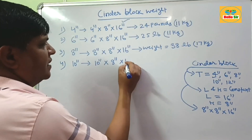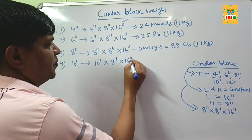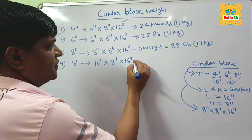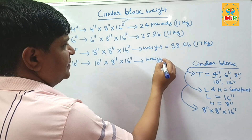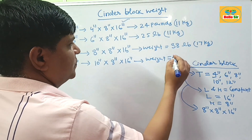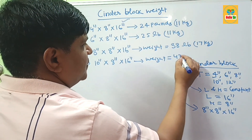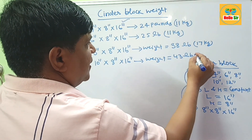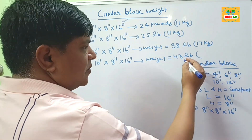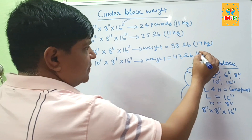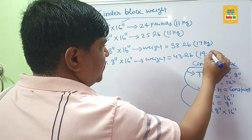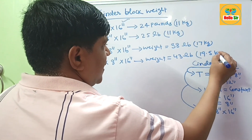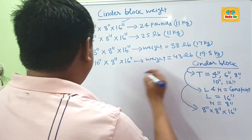The fourth block is the 10-inch thick cinder block. The height and length remain constant. This block weighs about 43 pounds. If you convert this figure to kilograms, it is about 19.5 kg.